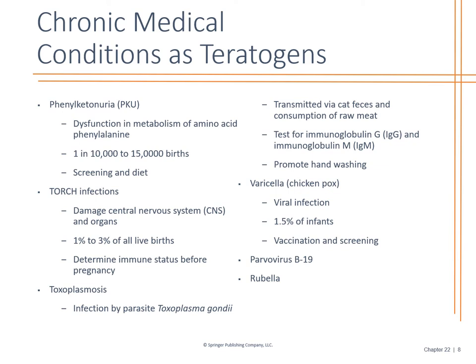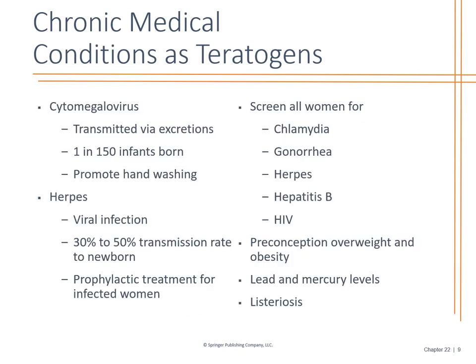We have PKU, which we test babies for at birth — we look at screening and diet for that. The TORCH infections affect the central nervous system. Look at the immune status before they become pregnant. Toxoplasmosis is why we do not want pregnant women cleaning the litter box — we want good hand washing. Varicella is very important in terms of vaccinations. We also screen for parvovirus and rubella. These are all things we review in our whole discussion with family planning, and even if the pregnancy is unintended, we still talk to them about screening.